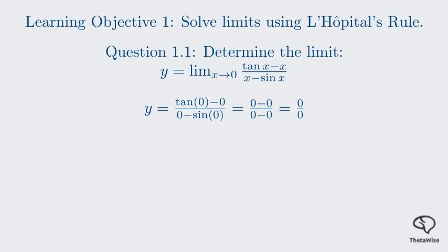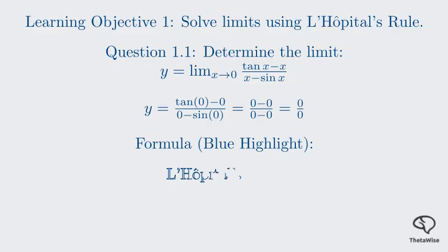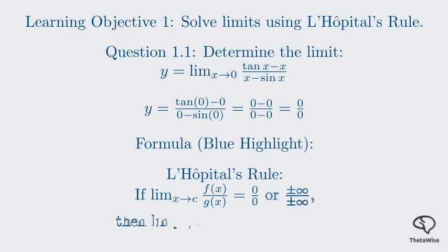L'Hôpital's Rule allows us to take the derivative of the numerator and the denominator separately. Let me write the rule for you. If you have the limit of f(x) over g(x) as x approaches c, and it gives the form 0 over 0 or infinity over infinity, you can replace it with the limit of the derivative of f(x) over the derivative of g(x).